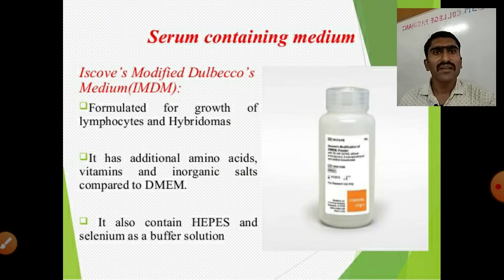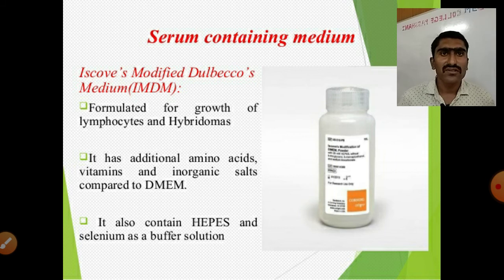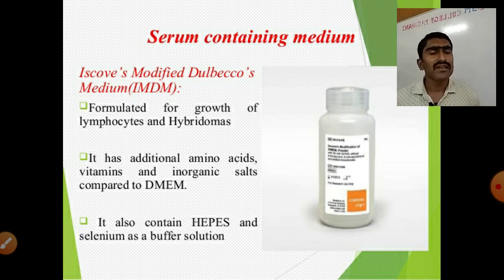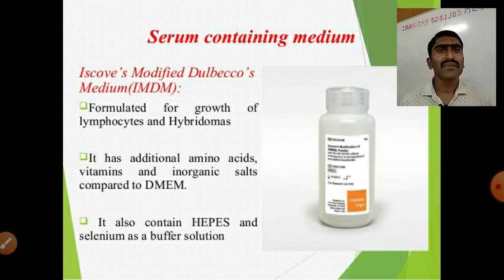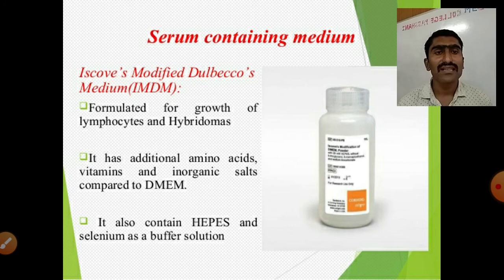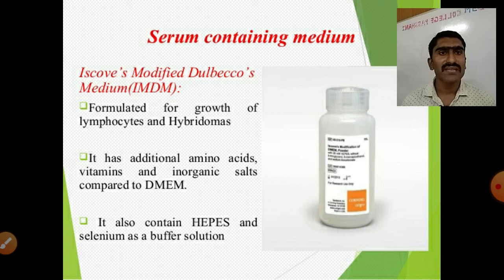Iscove's Modified Dulbecco's Medium (IMDM) is formulated for the growth of lymphocytes and hybridomas. It has additional amino acids, vitamins, and inorganic salts compared to DMEM. It also contains HEPES and selenium as a buffer solution.